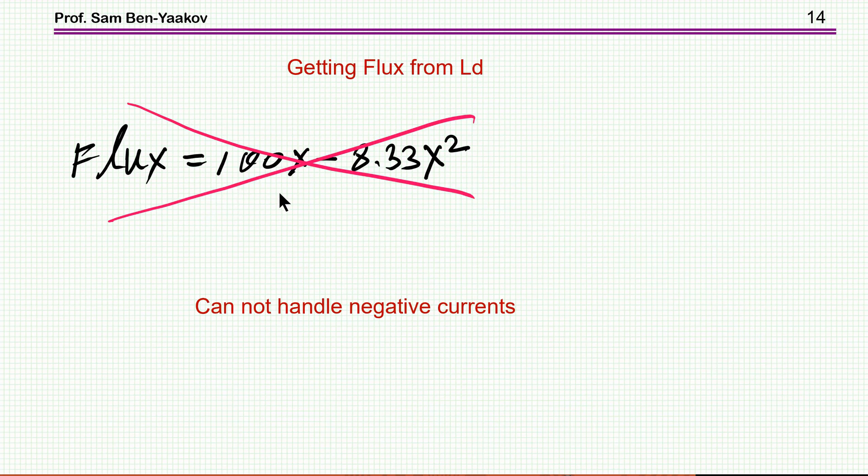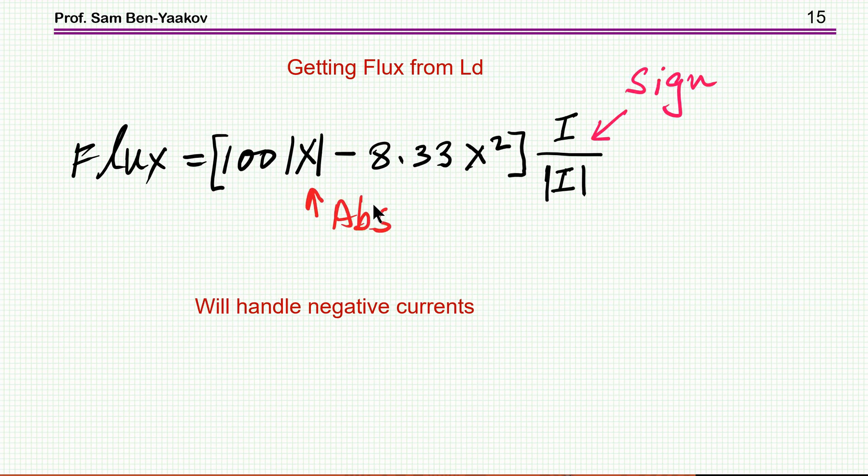But hold on, using it like this will not give you proper results. The reason is that this equation cannot handle negative current. Now you'd like to have a model that can handle positive and negative current. And this is only correct for one quadrant. So in order to get it sort of bi-directional or bipolar, you have to modify it a bit. And the way to modify it is as follows.